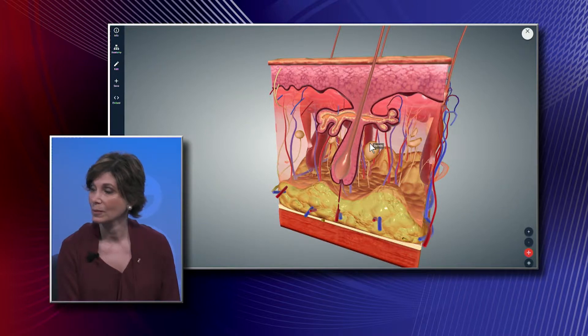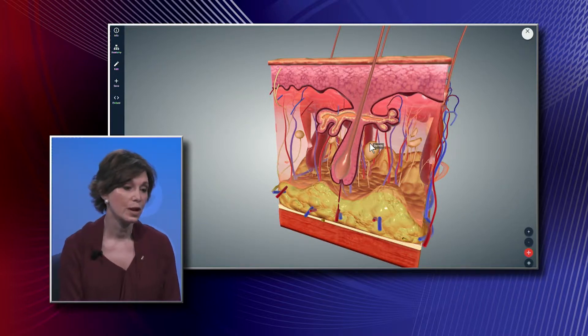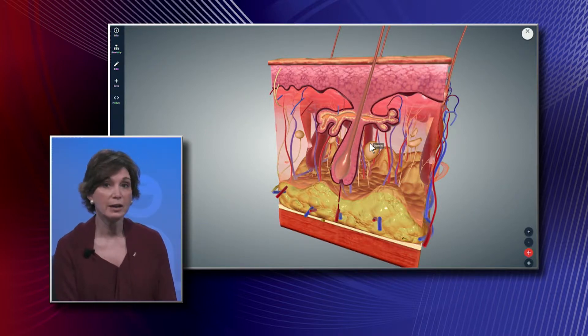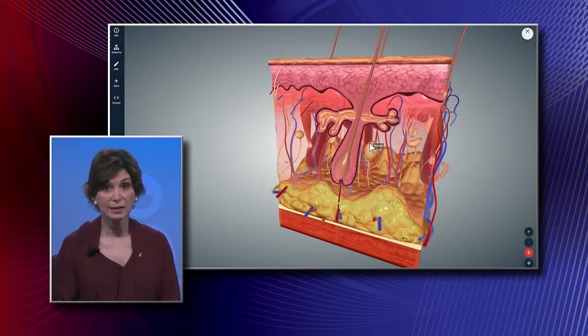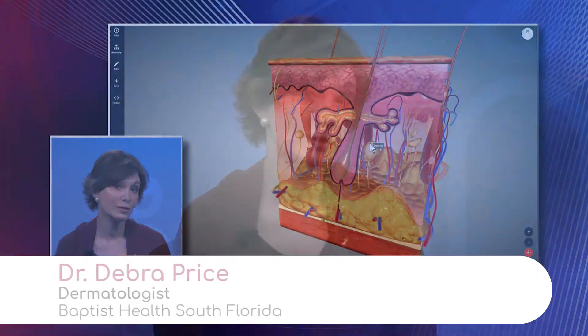How does the sun damage the epidermis and the dermis? The UVB and UVA rays damage the DNA in the cells. Our body tries to correct that, but it can't fix it all — what it can't fix creates mutations or abnormalities in our cells that cause them to grow abnormally and develop skin cancers.